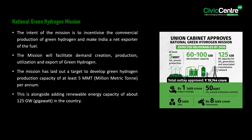Talking about the National Green Hydrogen Mission: the intent of the mission is to incentivize the commercial production of green hydrogen and make India a net exporter of the fuel. The mission will facilitate demand creation, production, utilization, and export of green hydrogen. It has laid out a target to develop green hydrogen production capacity of at least 5 million metric tonnes per annum, alongside adding renewable energy capacity of about 125 GW in the country.